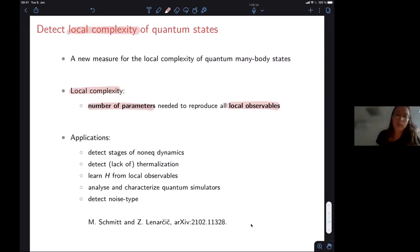So what this will be useful for will be, for example, to detect different stages of non-equilibrium dynamics, to detect whether the dynamics is thermalizing or the Hamiltonian that's governing dynamics is leading to thermalization or not. And there will also be some interesting side products, for example, we'll be able to learn Hamiltonians from the observations. And this is really based on local measurements, we believe it could be a good way to analyze and characterize quantum simulators during the real time evolution and could even give us a way to maybe detect what kind of noise might be inherently present in our simulator.